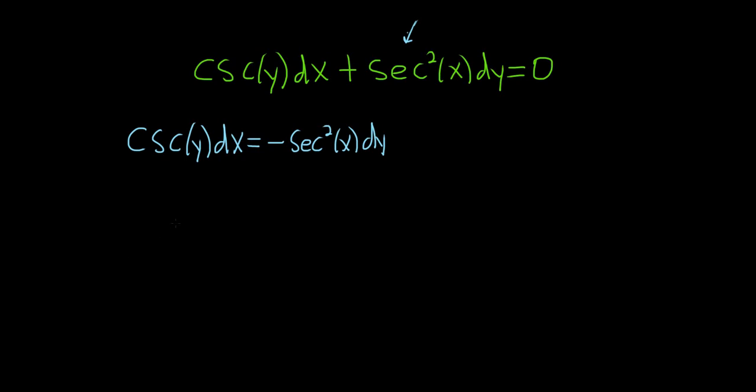Maybe a good next step would be to write these functions in terms of more familiar ones. So cosecant is really one over sine. Then we have the dx. And secant squared is really one over cosine squared. So this is negative one over cos²(x). And then we have the dy.